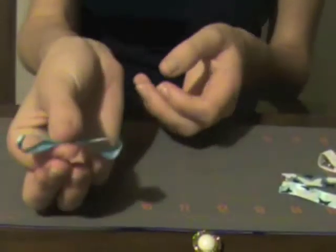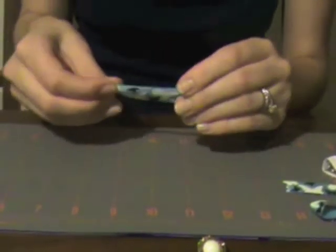Okay. So now you have one of your little loops. So I'm going to go ahead and do that with the two others. Again fold it in half and crease it.